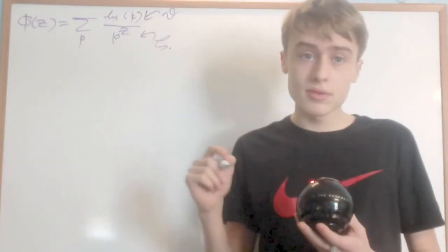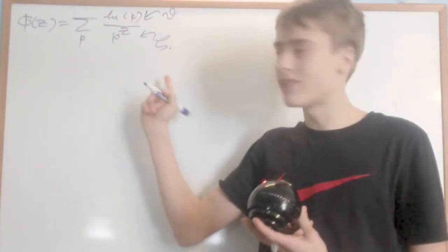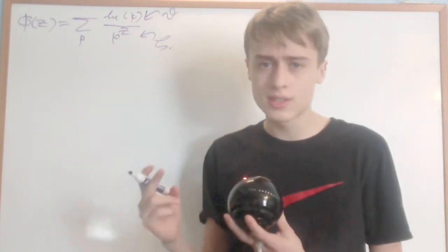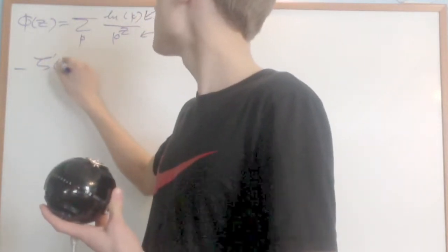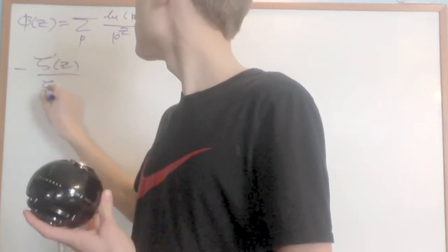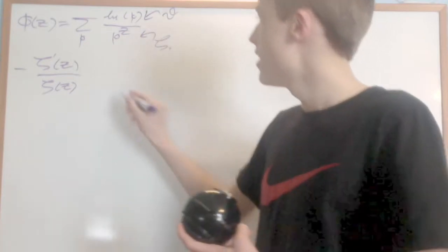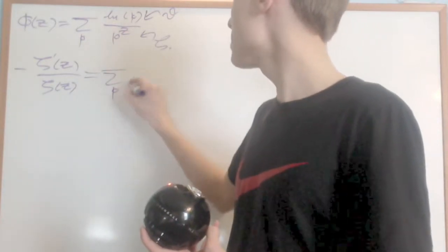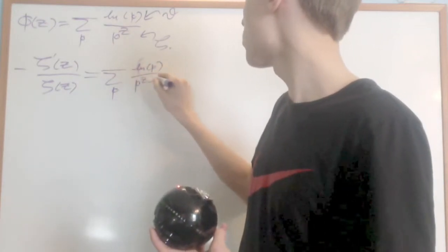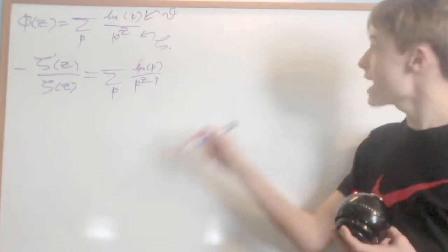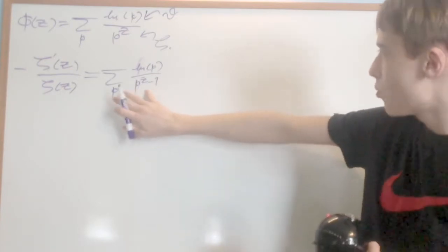There's an even closer relation between φ(z) and zeta, and that's by taking the derivative of the zeta function. Looking at minus ζ'(z) over ζ(z) — because I took the derivative of the log of zeta — I get that it equals the sum over primes p of the natural log of p over p to the z minus 1. That's so eerily close to φ(z), except we have that minus 1 in the denominator.